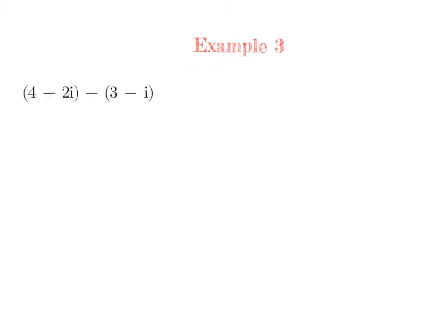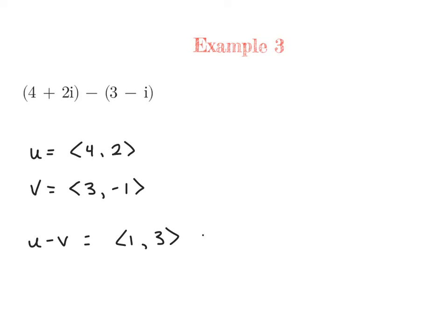Now let's try subtracting two complex numbers — same idea. Just for practice, let's represent them as vectors in the complex plane. Our second one would be (3, -1), and we are now subtracting. 4 minus 3 is 1, and 2 minus negative 1 is 3. So this gives us the complex number 1 plus 3i.